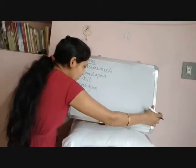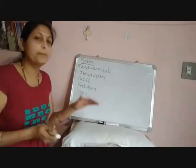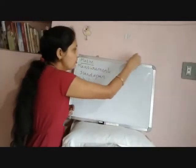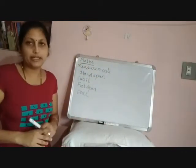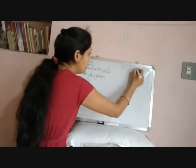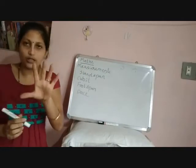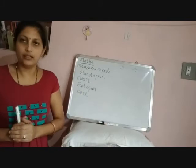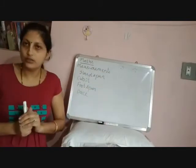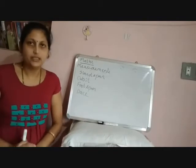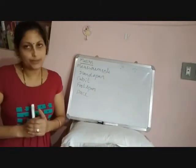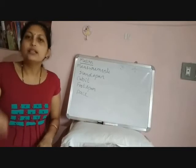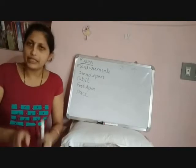These are all called non-standard units of length, because they vary from person to person. If I measure this board with my hand span, I get three hand spans. But if you measure the same board, you might get four hand spans, because your hand is smaller than mine. If a baby measures it, the result would be even more. So they are non-standard units because they vary from person to person.